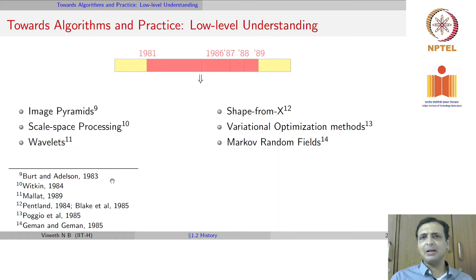Other things that happened in the 80s were the development of image pyramids, representation of an image in multiple scales, scale space processing, wavelets which was a landmark development at that time, shape from X - shape from shading, shape from focus, shape from silhouette - basically trying to get shape from various aspects of image formation. Variational optimization methods, Markov random fields, all of this were developed in the 1980s.